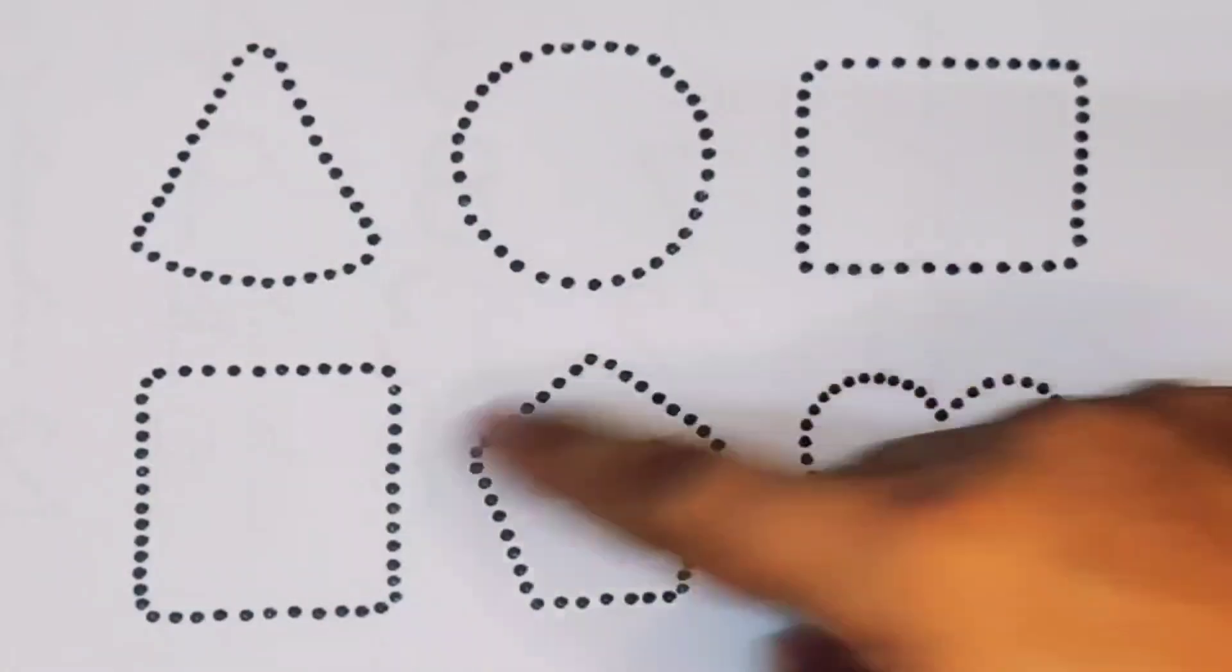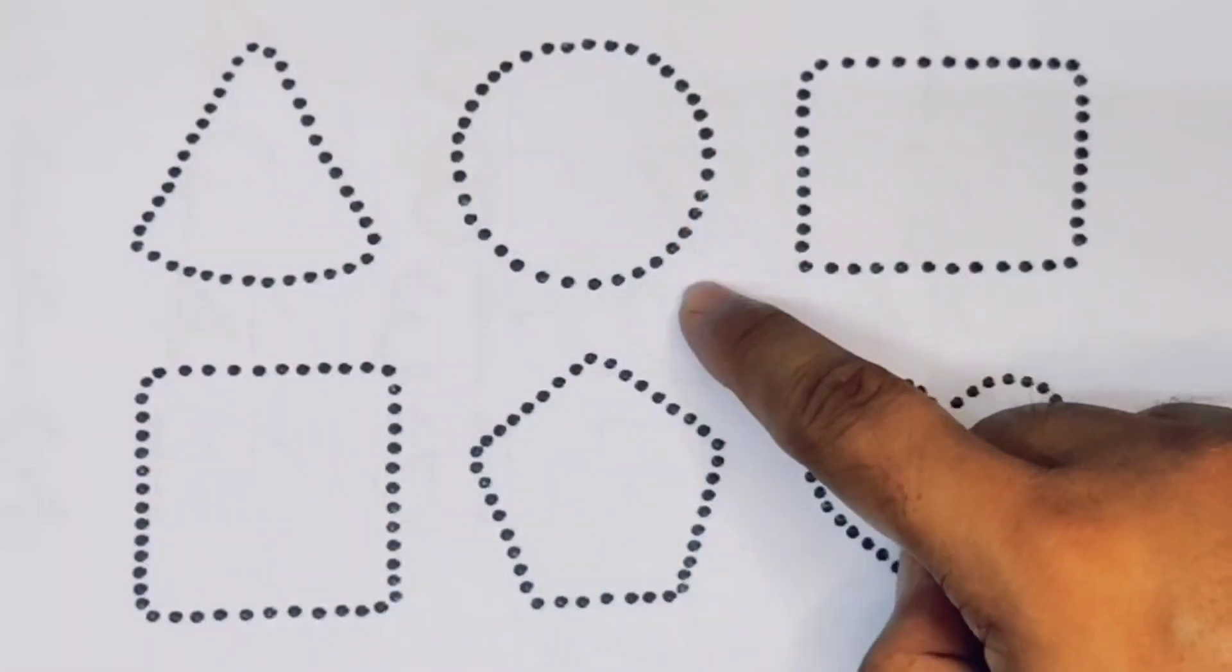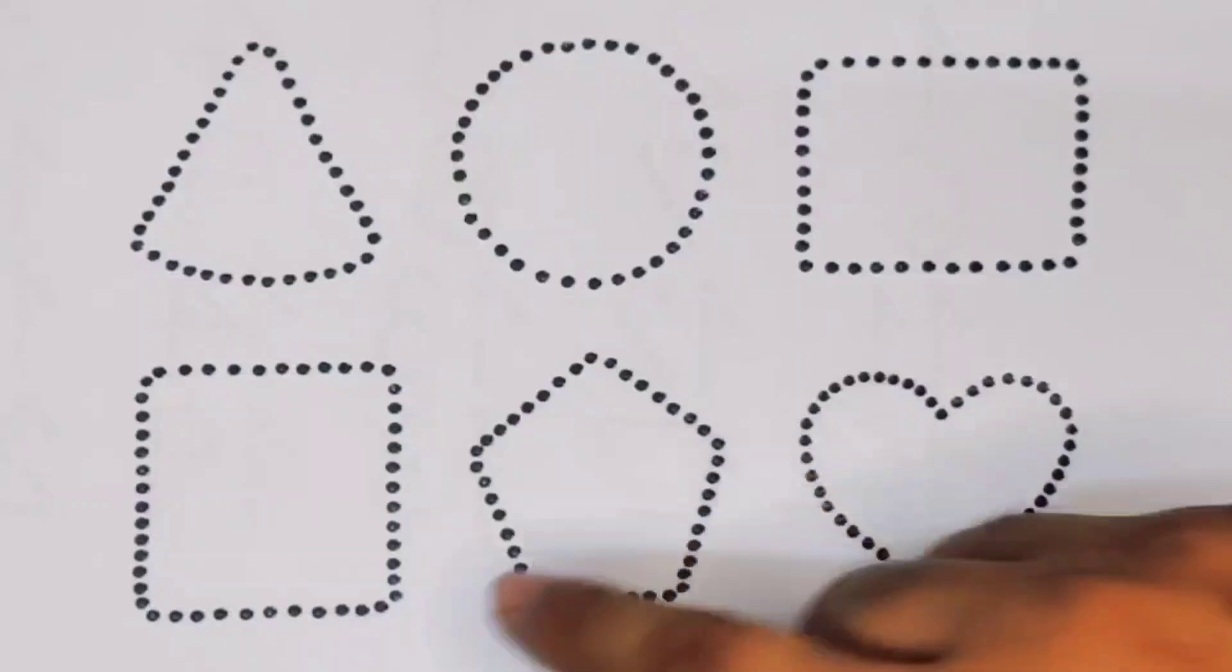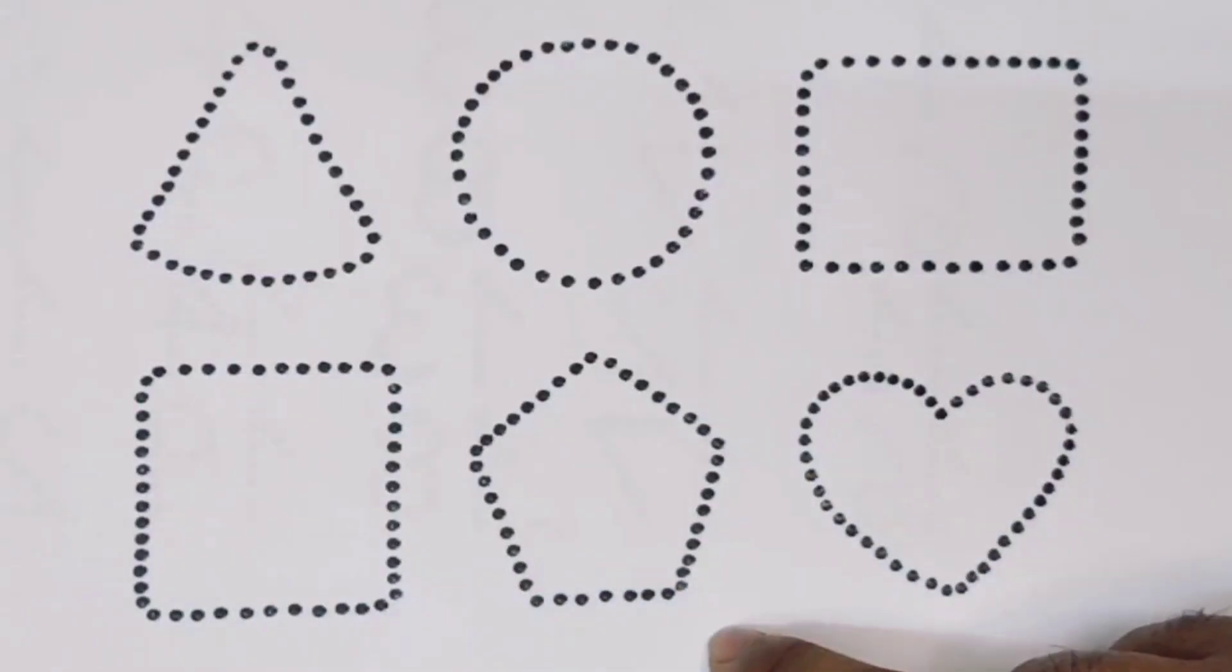Now let's learn the 2D shapes. Triangle, circle, rectangle, square, pentagon, and heart.